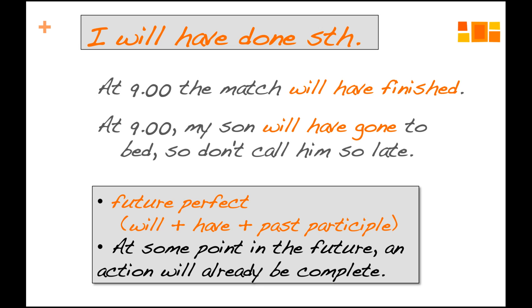At nine o'clock, 'the match will have finished' — it finishes sometime before nine o'clock, so at nine o'clock it will have finished. At nine o'clock, 'my son will have gone to bed' — he goes to bed at, say, 8:55, so at nine o'clock he will have gone to bed. We use it when at some point in the future, an action will already be complete and finished. This is when we use the future perfect.